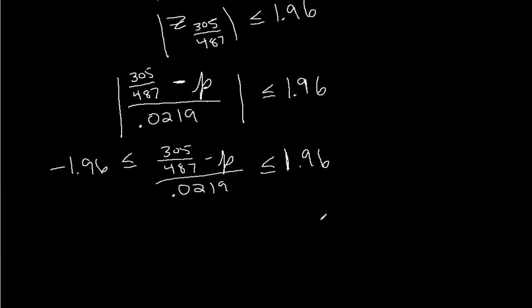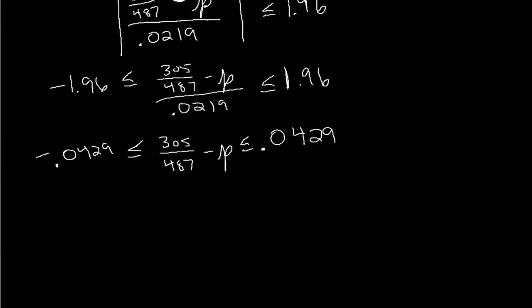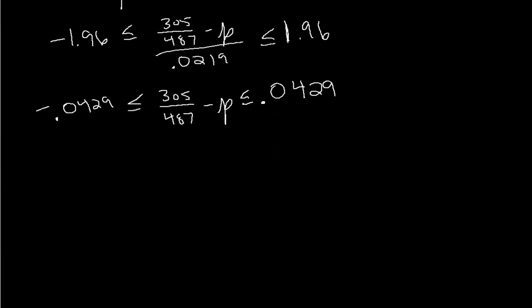And I have that negative 1.96 is less than or equal to 305 over 487 minus p over 0.0219, which is less than or equal to positive 1.96. You multiply by the 0.0219. And we get that 305 over 487 minus p is less than or equal to 0.0429, and over here it will be negative. So now I can subtract 305 over 487 from each portion of the inequality.